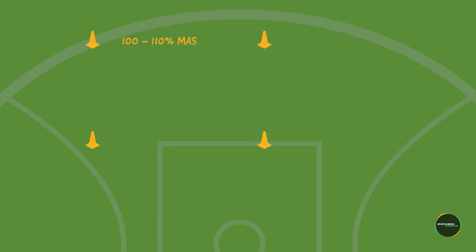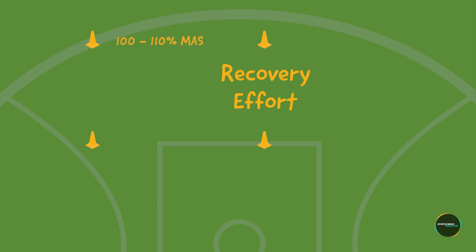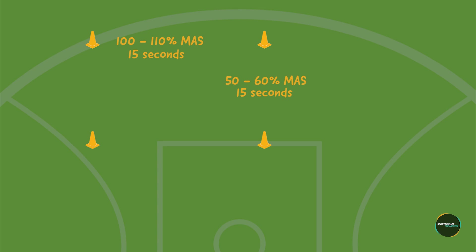The distances between cones on the long side are typically set at 100% or 110% of an athlete's MAS. The short sides are known as the recovery effort sides, and distances between these cones are typically set at 50 to 60% of MAS. A common time period used for MAS grids is a 15 second work effort and a 15 second recovery effort. Multiple grids can be set up within the largest grid to accommodate different athlete fitness levels.